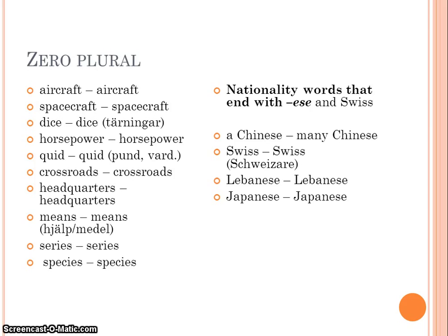Also, nationalities that end with ese and Swiss don't change in the plural: Chinese, many Chinese; Swiss, two Swiss; one Lebanese, two Lebanese; and Japanese.